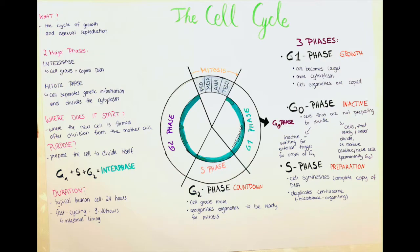A phase which the cell can enter but doesn't necessarily have to is the G0 phase — not 'go' phase, but G-zero. This is when the cell becomes inactive; it's in a kind of rest phase and is not preparing itself to divide again. There are two scenarios where a cell can enter G0: either when it's inactive and waiting for an external trigger to restart the G1 phase — for example during starvation, or when the body signals that enough of these cells exist. When stress occurs, the cell can go back to G1 and divide again, such as after damage to the cell or any other external trigger.